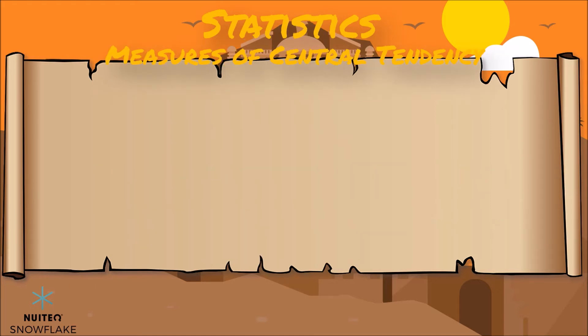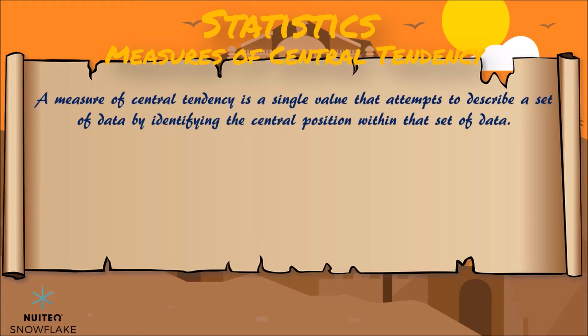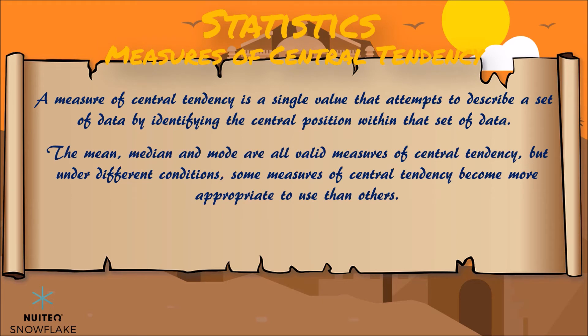Now let's talk about measures of central tendency. A measure of central tendency is a single value that attempts to describe a set of data by identifying the central position within that set of data. The mean, median, and mode are all valid measures of central tendency, but under different conditions, some measures of central tendency become more appropriate to use than others.